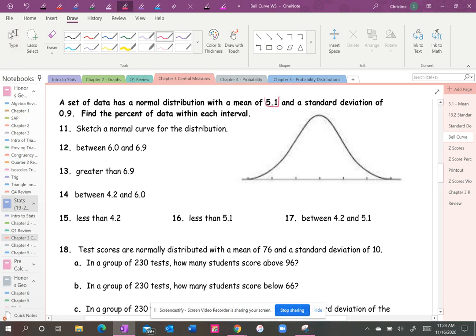All right, so the first thing that wants us to do here is there is a mean of 5.1 and a standard deviation of 0.9, so that's easy. This would just go to 6, 6.9, and then what is that, 7.8. I was right, okay.